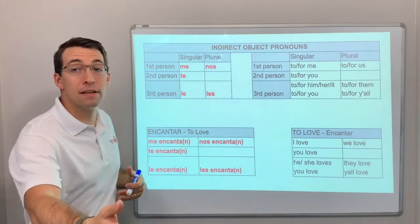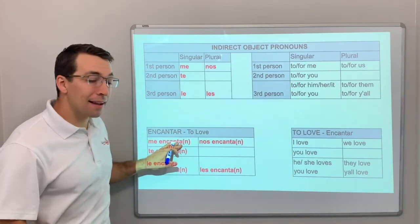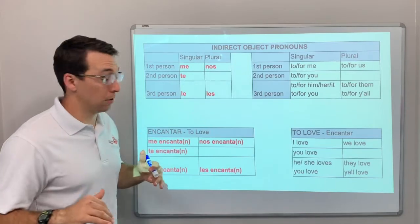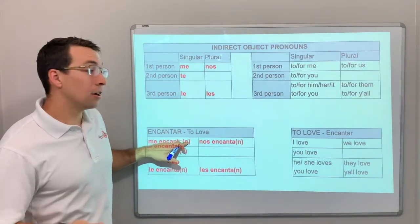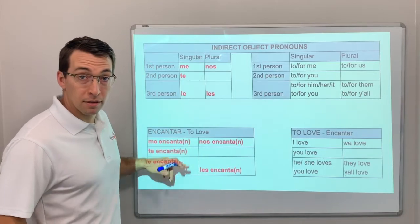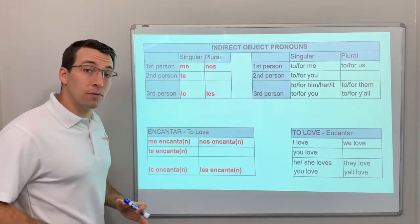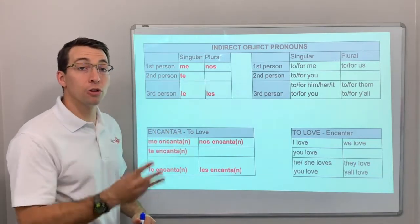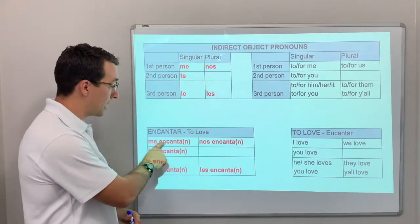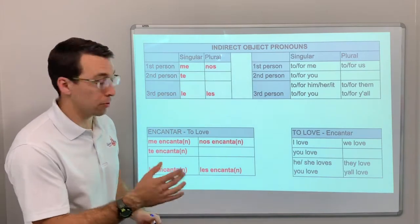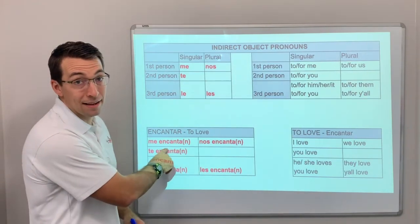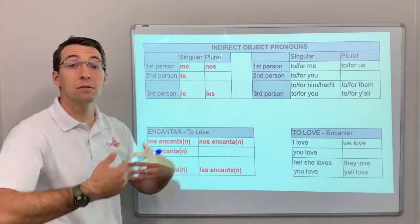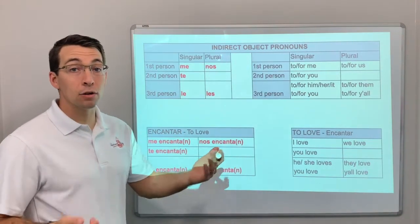So encantar — 'I love it.' Me encanta el fútbol — I love soccer. Or me encantan los deportes — I love sports. With backwards verbs, we only conjugate the verb in the third person, either singular — me encanta — or plural — encantan. Sports is plural, so 'sports are pleasing to me': me encantan los deportes.